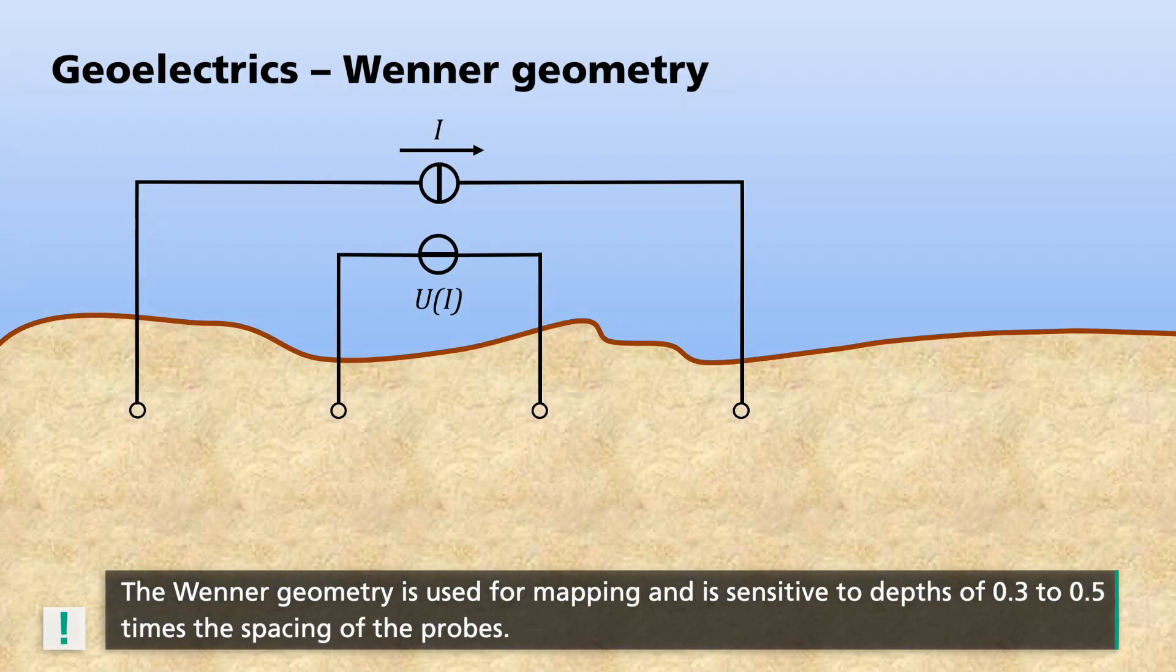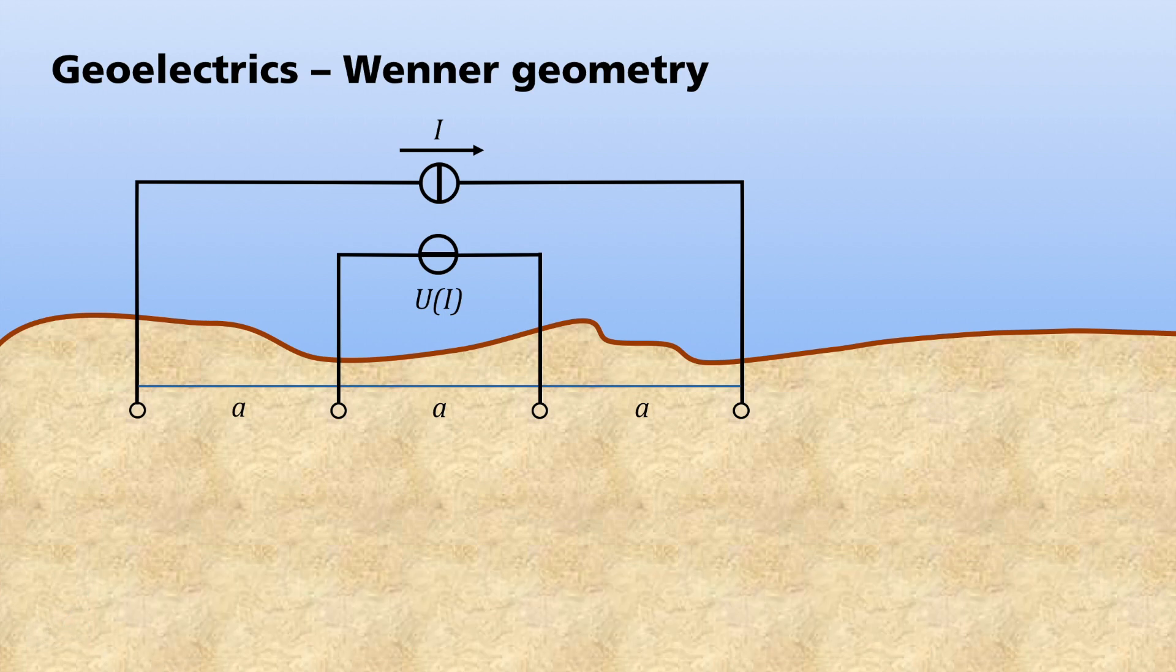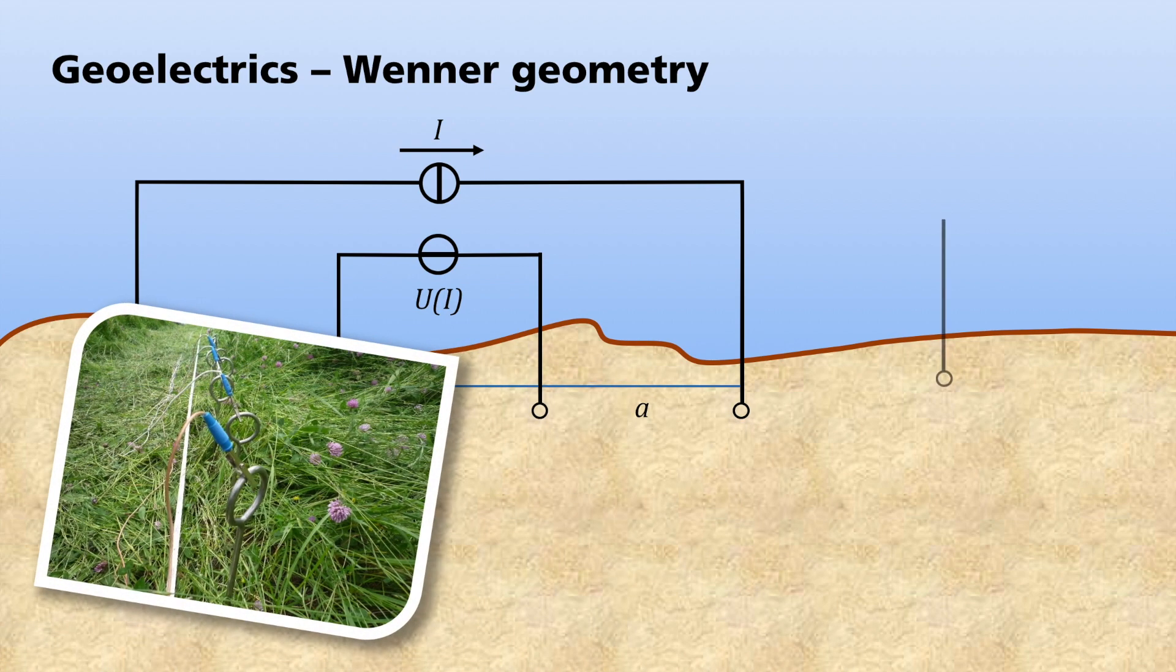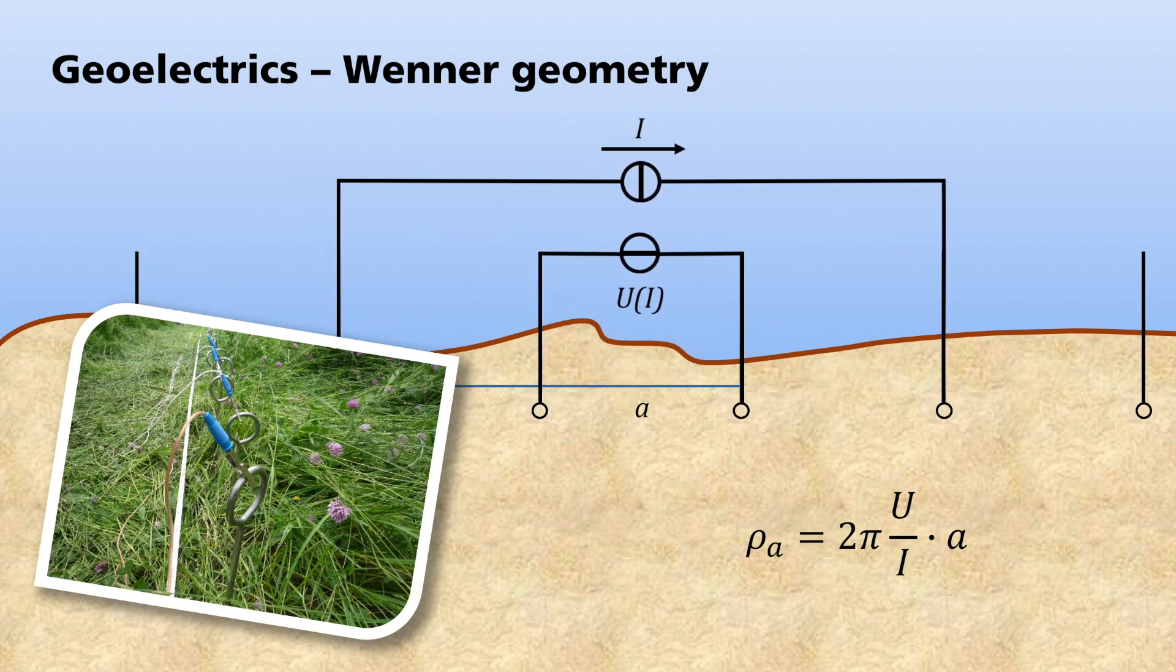In order to investigate the distribution of the resistivity, the measurement geometry, or better said, the experimental setup must be adapted to the target area in the subsurface. Two typical measuring geometries are the so-called Wenner and Schlumberger geometries. A Wenner geometry is used to map the subsurface at a fixed depth. For this purpose, the distance between all four probes is chosen to be the same. This arrangement is particularly sensitive to depth of 0.3 to 0.5 times the spacing of the probes. In order to measure a profile, many metal spikes are in practice inserted one behind the other at a selected distance, and four adjacent spikes are connected to the measuring apparatus. The apparent resistivity rho A is then calculated from 2 pi times U divided by I times A. Then the connections along the profiles are replaced and the measurement is repeated.